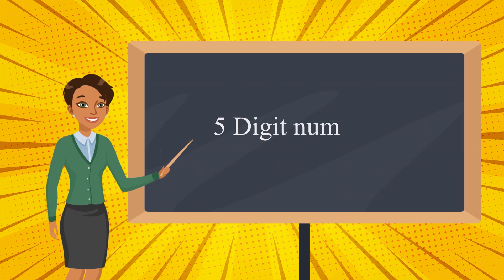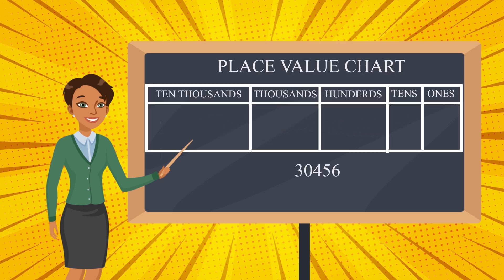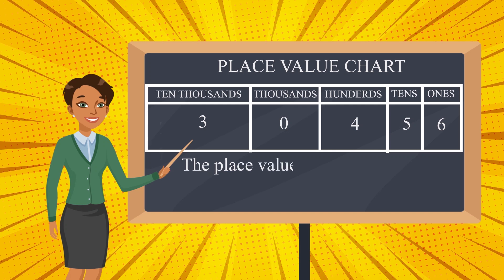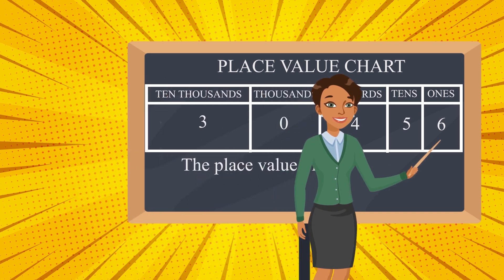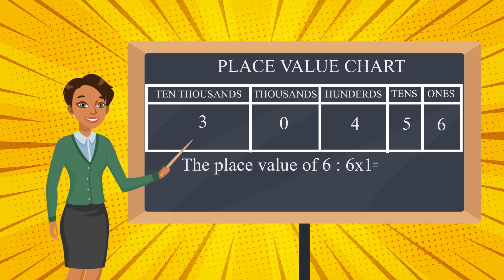If we want to find out the place value of a five digit number, let's see how it is done. The number is 30456 — a five digit number. We start from the ones place: six, then five, four, zero, and three. The place value of six will be six, because six is in the ones place.